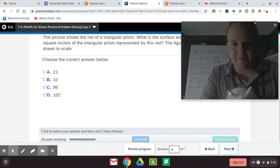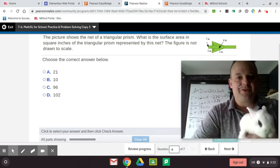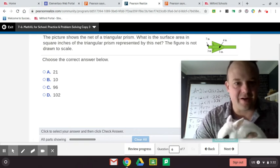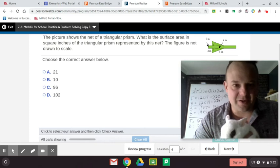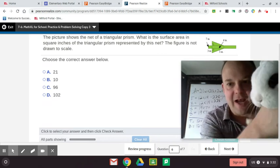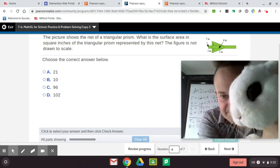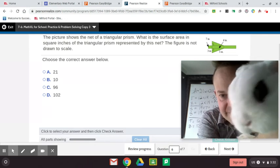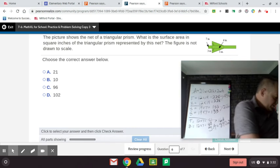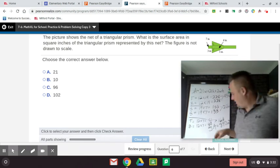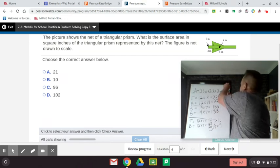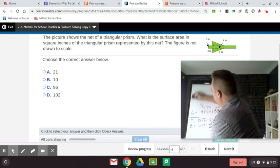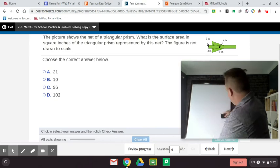The picture shows Bubbles. The picture shows a net of a triangular prism. What is the surface area in square inches of the triangular prism represented by this net? The figure is not drawn to scale. Choose the correct answer below. So basically Bubbles, we have to find the area of all five of those faces. Alright, here we go. Let's do that. Let me erase this. Stay magnets. You guys try to work out yours with me.